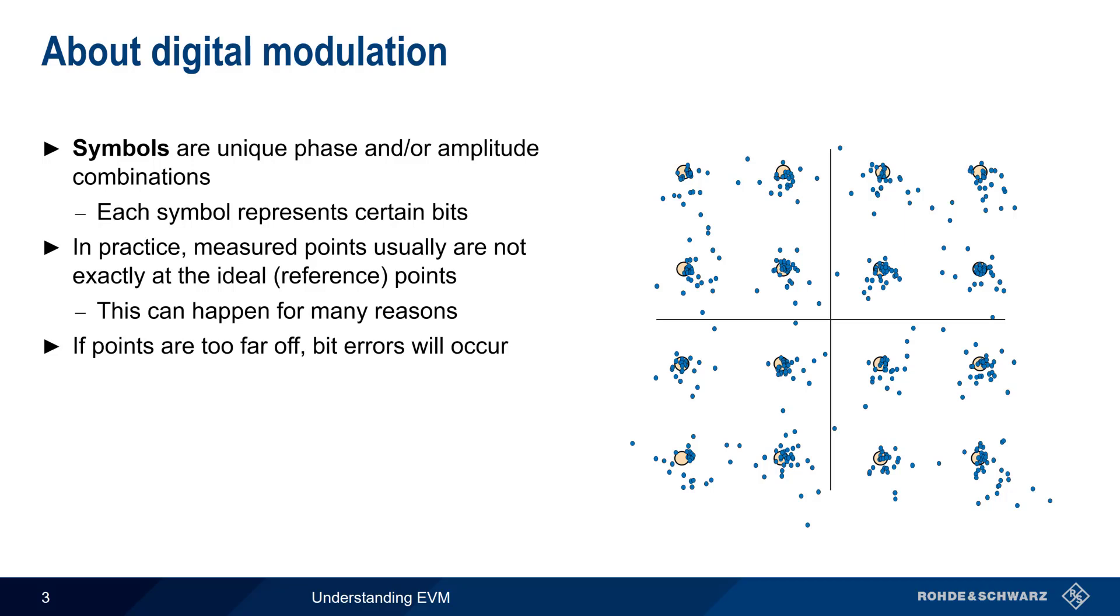The most common way to quantify this distance between the measured or actual point and the ideal point is something called Error Vector Magnitude, or EVM.